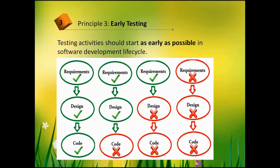Option two: requirements and design documents are correct, but there is a defect in the code. Developers fix the code — it takes, for example, one day. Option three: requirements are correct but there is a mistake in the design document, so both the design and the code written according to it must be changed. The whole process takes, for example, seven days.